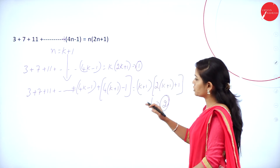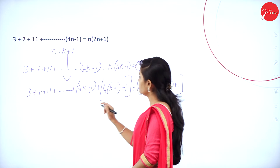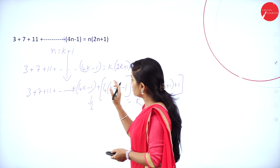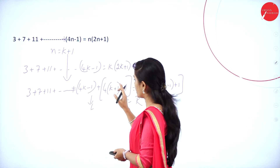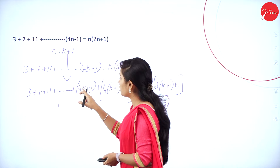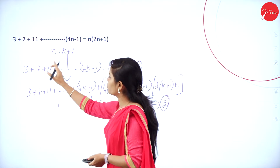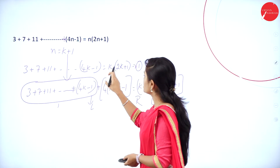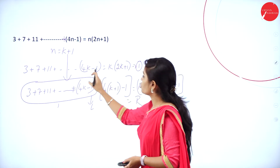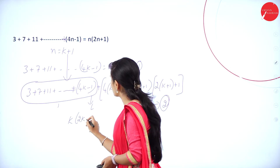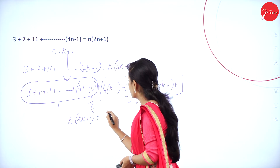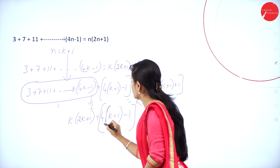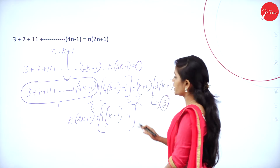Now take the LHS of equation number 2. There are two terms: the first term is 3 plus 7 plus 11 plus up to (4k minus 1), and the second term is 4 into (k plus 1) minus 1. By equation number 1, in place of the first part we can write k into 2k plus 1. So LHS becomes k into 2k plus 1 plus 4 into (k plus 1) minus 1.